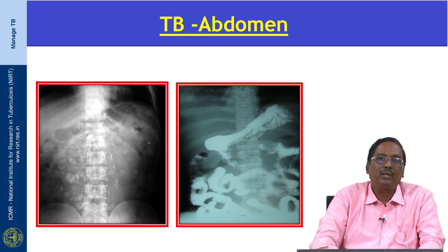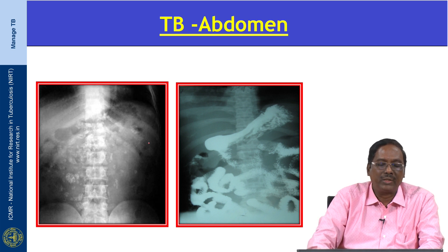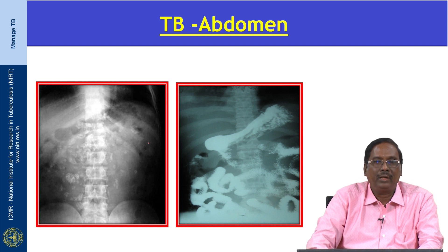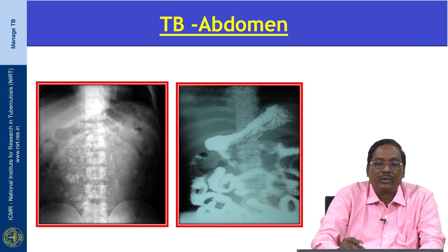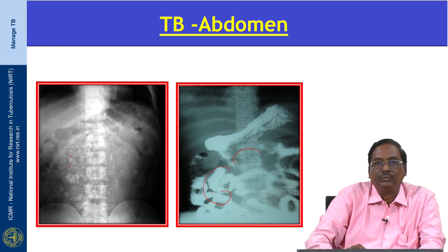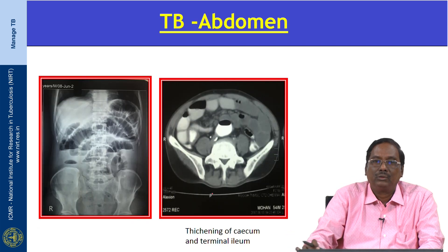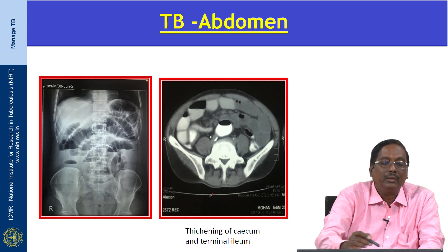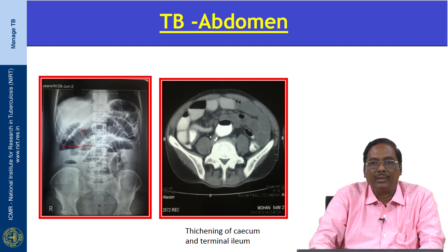Regarding the radiological features of TB abdomen, the commonest involvement is the ileocecal junction, seen in 80 to 90 percent of patients with abdominal tuberculosis, due to the abundance of lymphoid tissue there. There are multiple calcifications of the mesenteric nodes. A barium meal study shows thickening of the ileum, dilatation, and clumping of bowel loops. Plain X-ray of the abdomen shows multiple fluid levels with dilated bowel. CT abdomen shows thickening of the cecum and terminal ileum.